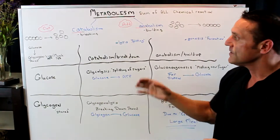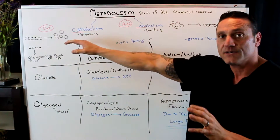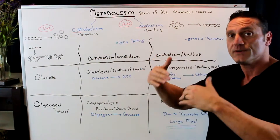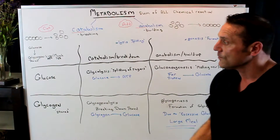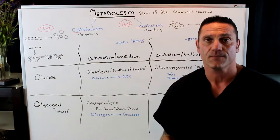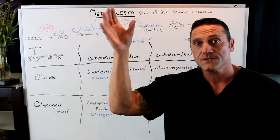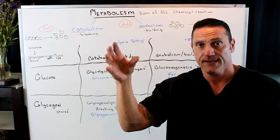Remember, catabolism is breaking down — to cut. Anabolism is to build up. Now, in cellular respiration, you're breaking down glucose to glycogen.